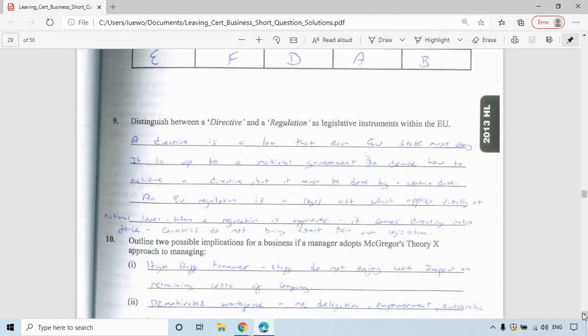Moving on to question nine, this is from unit seven. Distinguish between a directive and a regulation as legislative instruments within the EU. A directive is a law that each EU state must obey. It's up to the national government to decide how to achieve a directive, but it must be done by a certain date. Whereas an EU regulation is a legal act which applies directly at national level. When a regulation is approved, it comes directly into force. Countries do not bring about their own legislation for that.